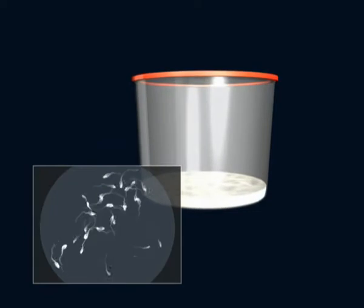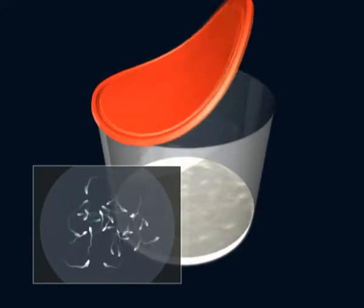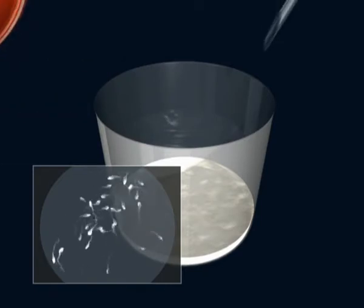The semen sample has to be obtained through masturbation after an abstinence of three to five days. The ejaculate is deposited in a collection pot.